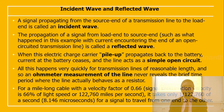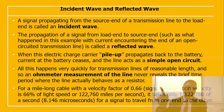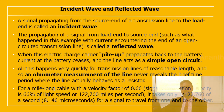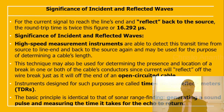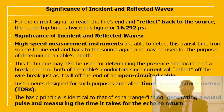For a one-mile-long cable with a velocity factor of 0.66, the signal propagation velocity is 66% of the speed of light, approximately 122,760 miles per second. It takes approximately 8 microseconds for a signal to travel from one end to the other. For the current signal to reach the line's end and reflect back to the source, the round-trip time is approximately 16 microseconds.